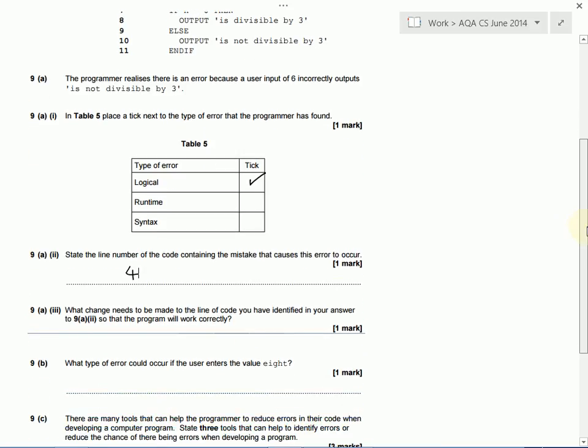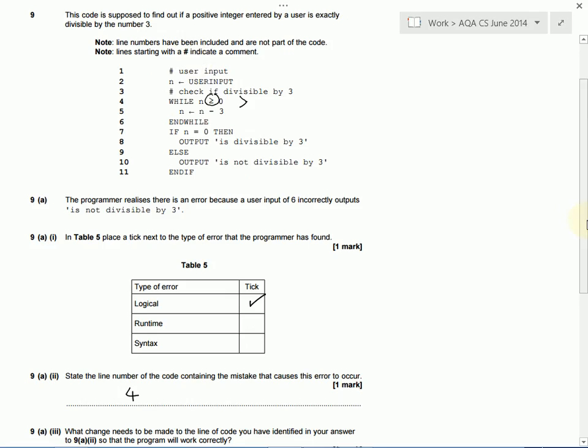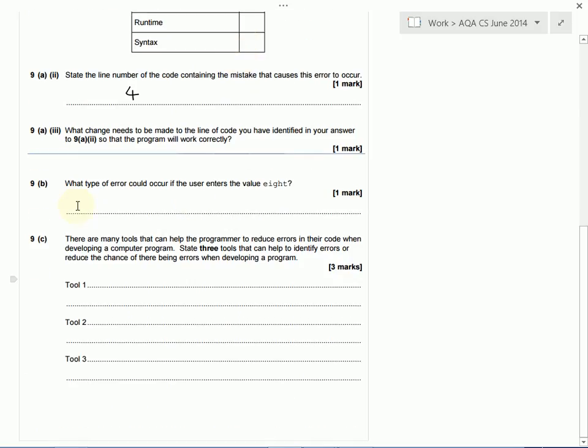Then we've got a different type of error happening. What type of error could occur if the user types in 8, E-I-G-H-T? If they do that, then we're going to save that text in n. And we can't compare 8, E-I-G-H-T, with a 0. We don't know whether it's greater than or less than or equal to. So we're going to get a runtime error at this point. Our program will crash. You might say a type error. If this was Python, you'd get a type of runtime error that's called a type error, which is saying that you're trying to treat some text as a number and it just doesn't cope. So you'd write down that this is a runtime error.